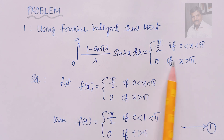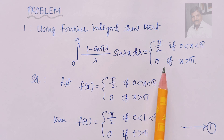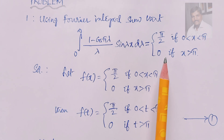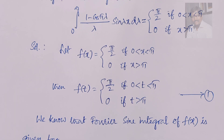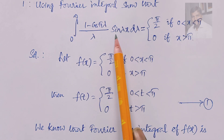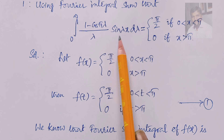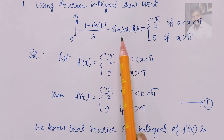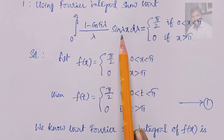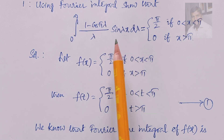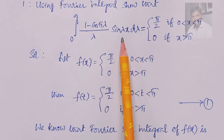In order to prove this, we use a Fourier sine integral or cosine integral — which one depends on the problem. Here we have sin(λx) in the integrand, so we have to use the Fourier sine integral.